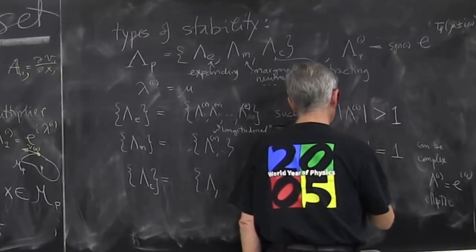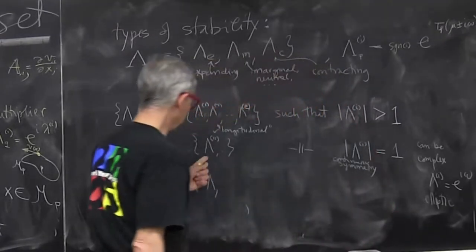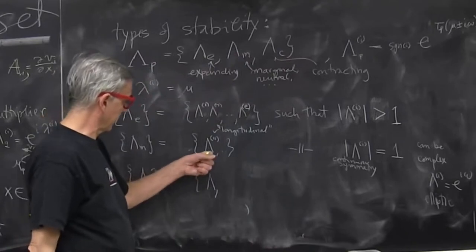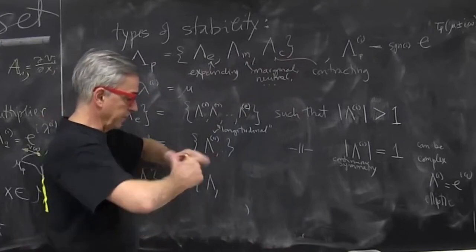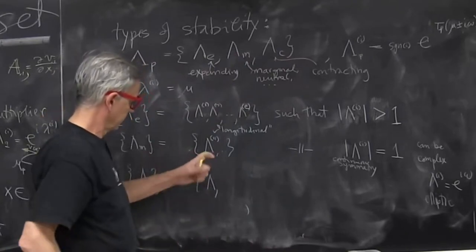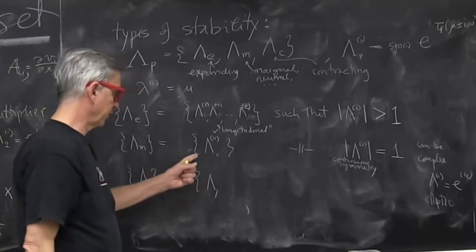So when you have continuous symmetries, the one that we already discussed once has to do with the orbit is not changed by moving points on it forward in time.